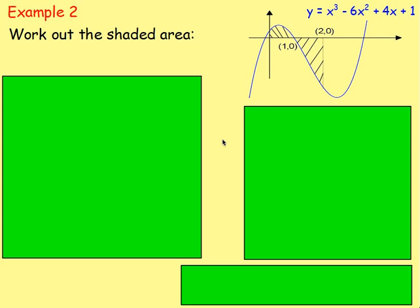Let's try example 2. Work out the shaded area. This time we have our function — the curve y equals x cubed minus 6x squared plus 4x plus 1. You can see the graph is crossing over the x-axis. The area we want starts at 0, crosses at 1, and ends at 2. Because part of your graph is above the x-axis and part is below, what do you do? Work them out separately.